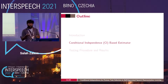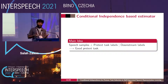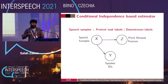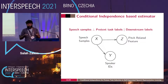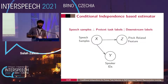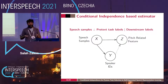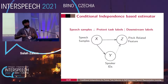To answer this question, we present our utility estimator, whose main idea is based on conditional independence. The more the speech samples are independent of the pretext task labels given the downstream labels, the more this pretext task should be good for the final downstream performance. As an example for speaker recognition: X are the speech samples, Y are the speaker IDs, and Z is a pitch-related feature used as a pretext task. We can infer Z and Y directly from X. What we want to estimate is how much we can infer Z from Y without the need of X — how strong the dashed arrow is. If it is strong, then Z should be a good pretext task for speaker recognition.